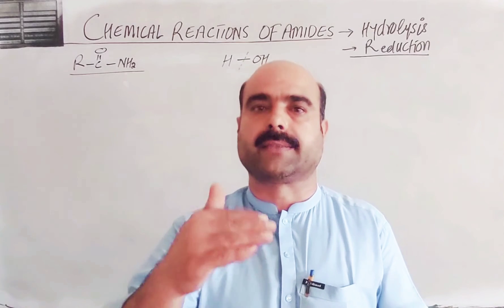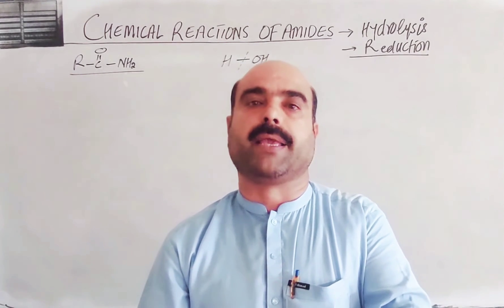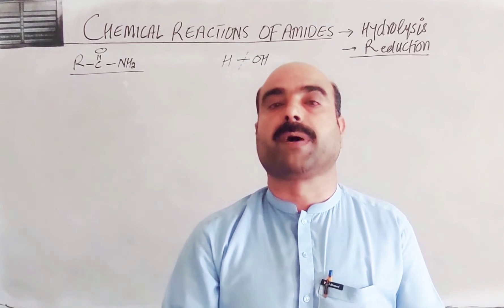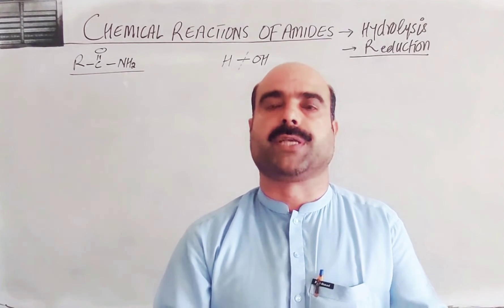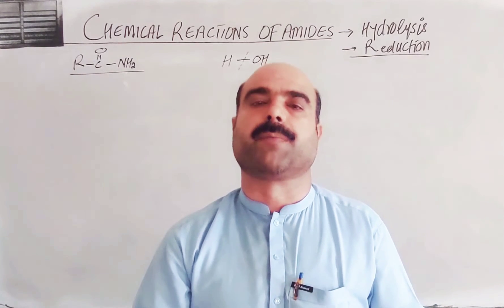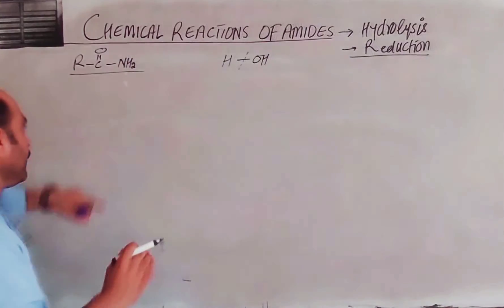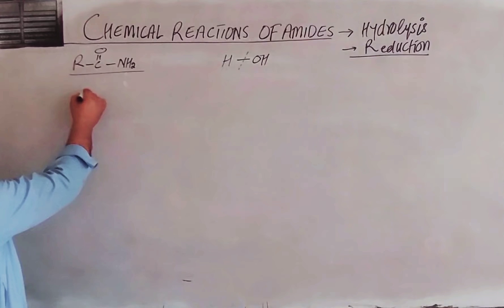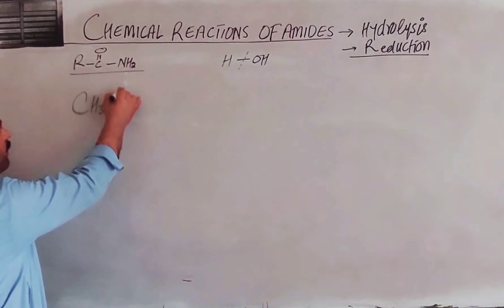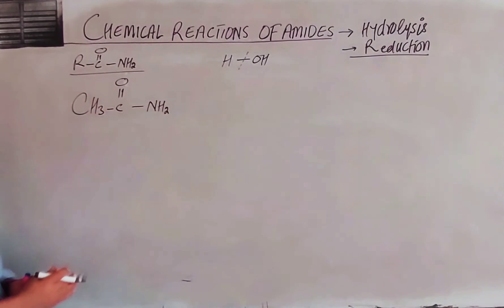In order to make water a good conductor, we add either an acid or a base. This reaction will either be catalyzed by an acid or a base. In the acid medium, hydrogen ions are the representation; in the basic medium, hydroxide ions are present. The simple formula for amide is R-C(=O)-NH2.